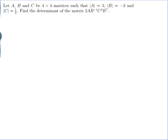Let A, B and C be 4 by 4 matrices such that the determinant of A is 5, the determinant of B is minus 3, and the determinant of C is a half. Find the determinant of the matrix 2AB inverse C cubed B transpose.